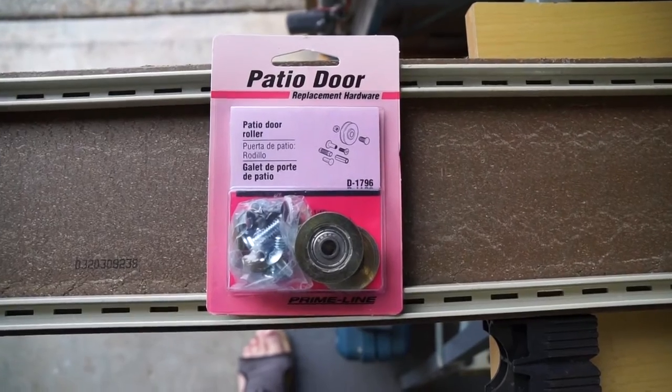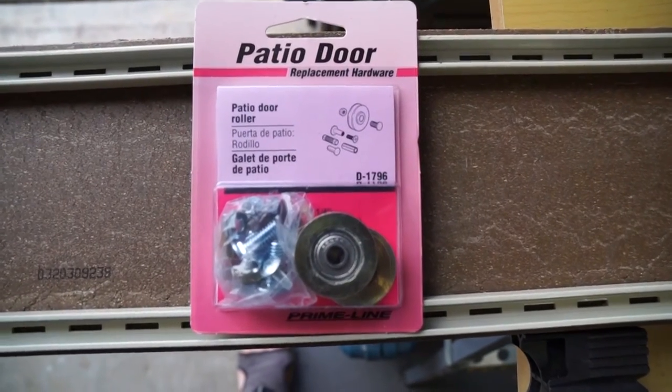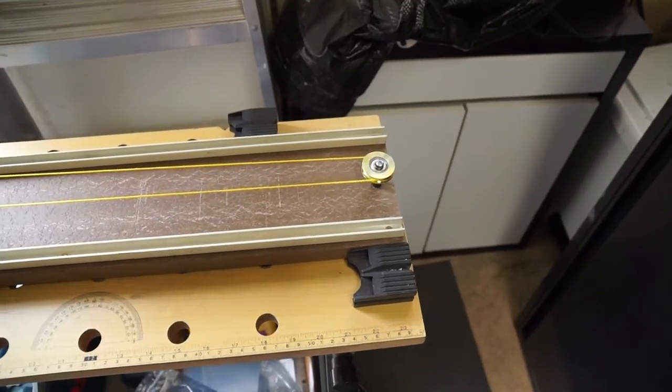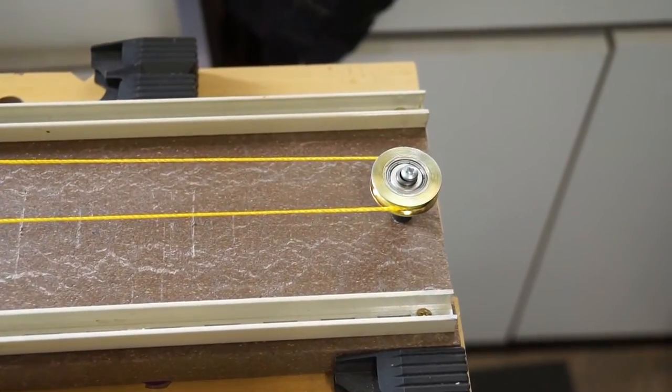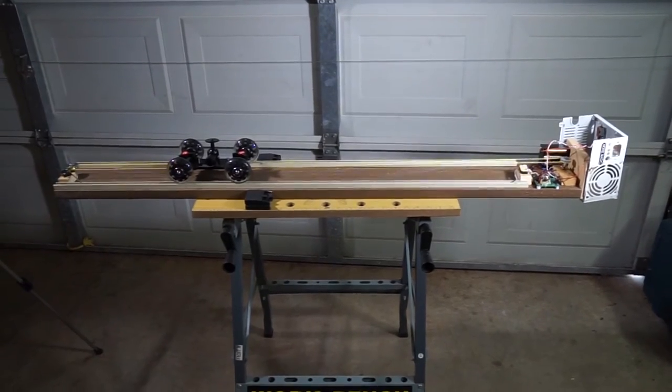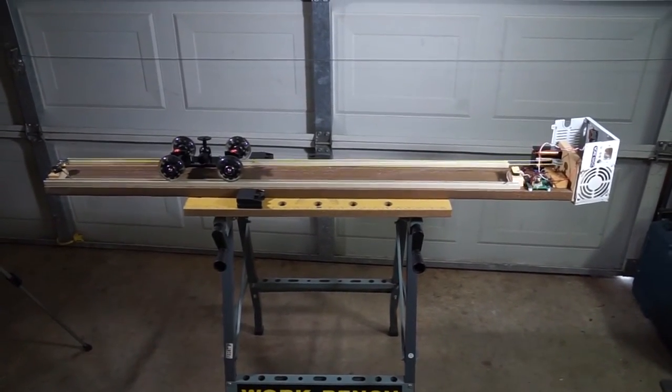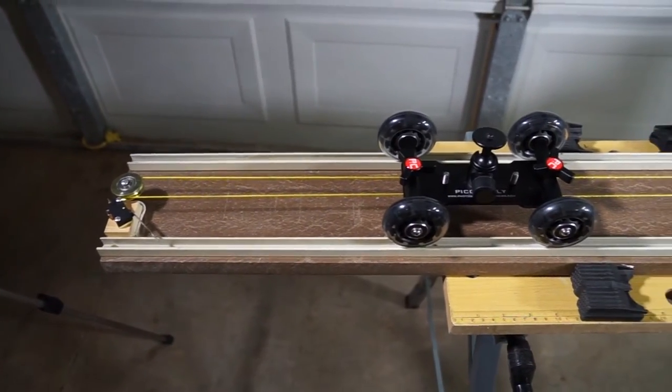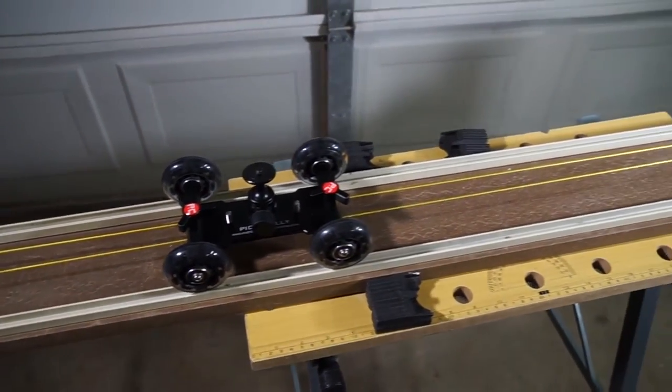For the idler pulley I used a patio door wheel that you can buy in a Home Depot or Lowe's hardware store. I used a similar wheel but made of plastic for the motor pulley. Here is the complete setup opened up. You can see that I used regular string to connect the two pulleys and the moving cart.